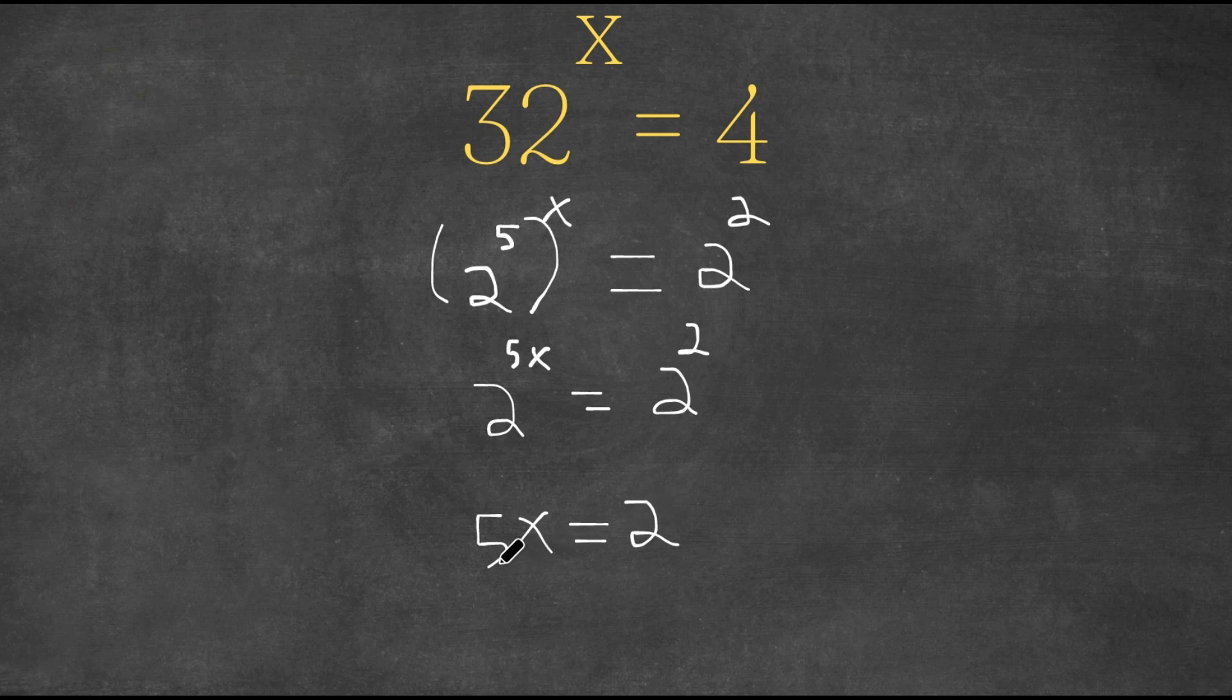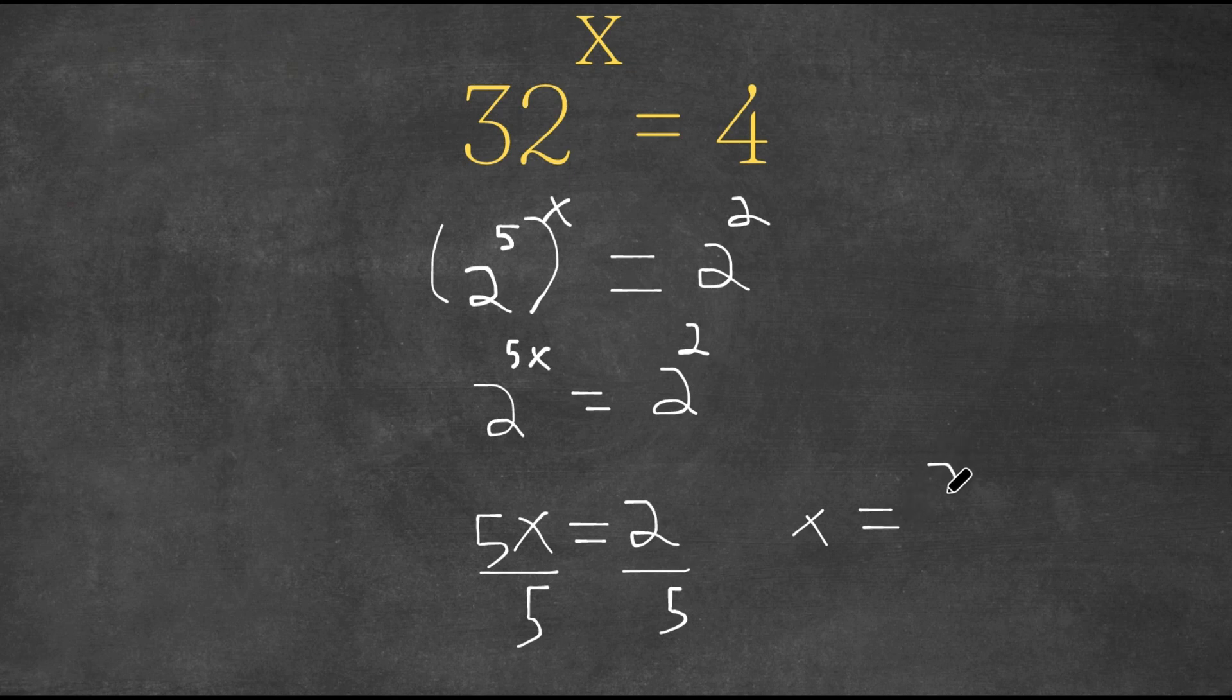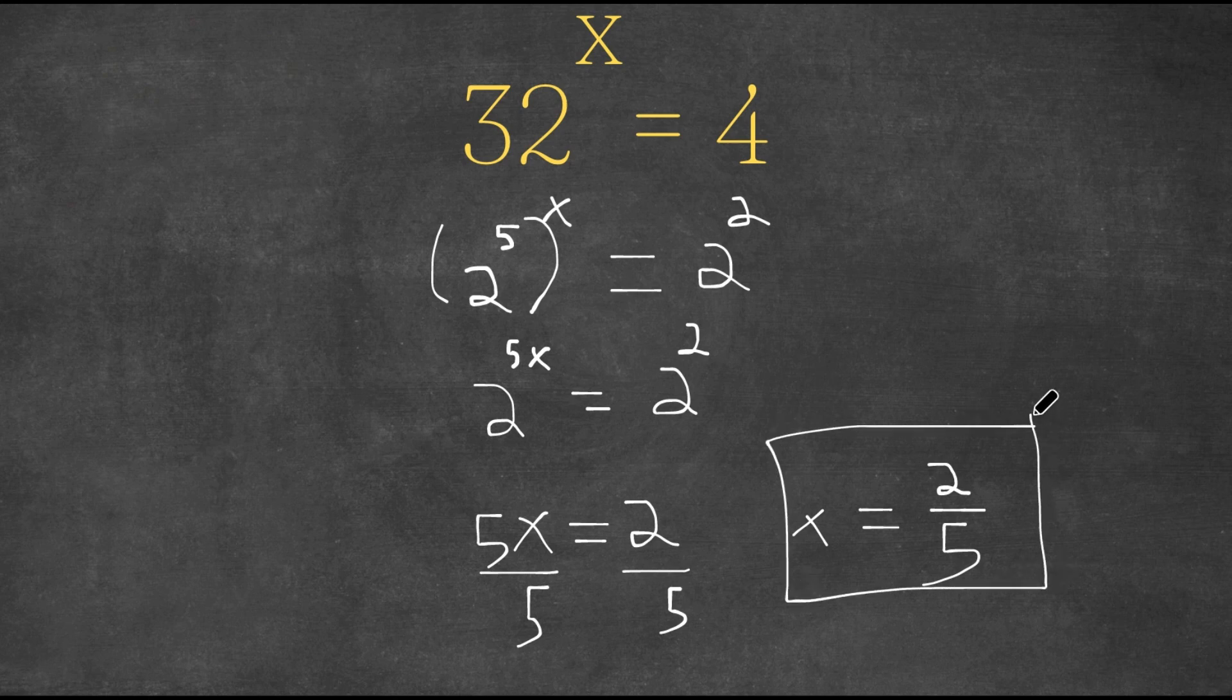Now we can simply solve for x. All we need to do is divide by 5 on both sides, and this gives us x equals 2 over 5, and this would be our answer to this problem.